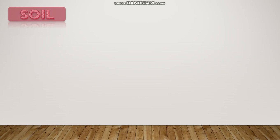Today we are going to start a new lesson: soil. Soil is a very important and valuable natural resource. Plants grow in the soil, and some animals like rabbits, earthworms and ants live in the soil. Big pieces of rocks break down into tiny pieces by the heat of the sun, moving air and running water. This process is called weathering. When these tiny pieces mix with organic matter and minerals, soil is formed.